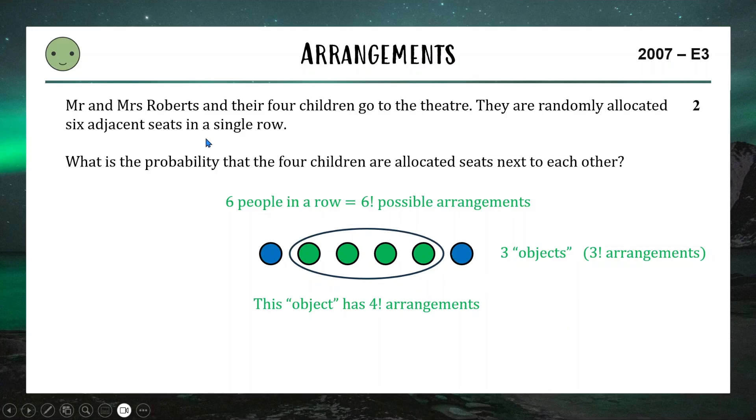That means their total arrangements is going to be three factorial times four factorial if we wanted to look something like this. So to answer the question, which is to find the probability that it looks like this, well, that's going to be three factorial times four factorial out of a total possible arrangements of six factorial. And that actually works out to be a nice, neat one out of five for two marks. That's our arrangements.